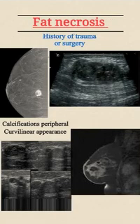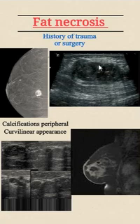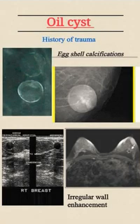Fat necrosis requires a history of trauma or surgery. You typically see calcification in a peripheral eggshell pattern. On ultrasound, an irregular pattern is seen depending on the extent and size of the trauma. Importantly, fat necrosis can simulate malignancy, so you should confirm the history and follow up carefully.